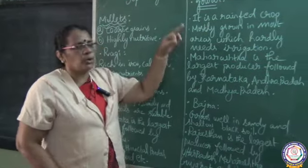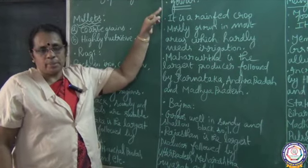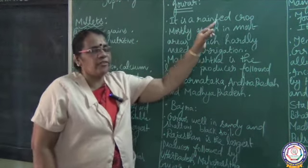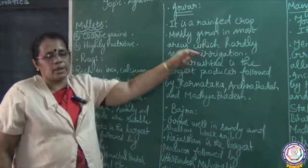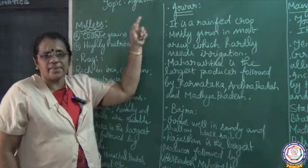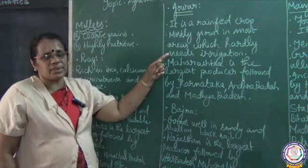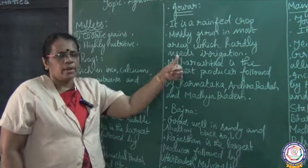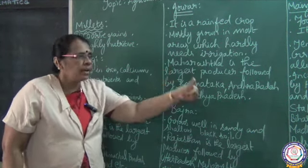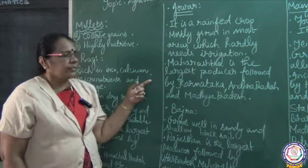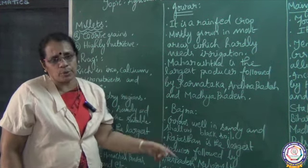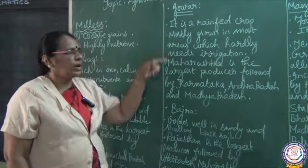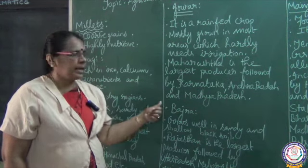The next important millet is jowar. Jowar is a rain-fed crop that grows particularly in moist areas and hardly requires irrigation. When you talk about the largest producing state, Maharashtra is the largest producer of jowar, followed by Karnataka, Andhra Pradesh and Madhya Pradesh.